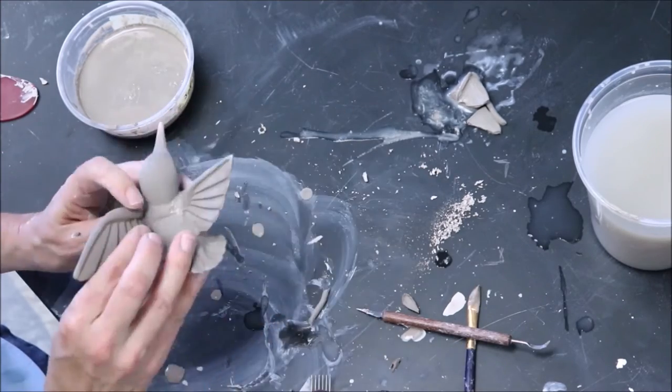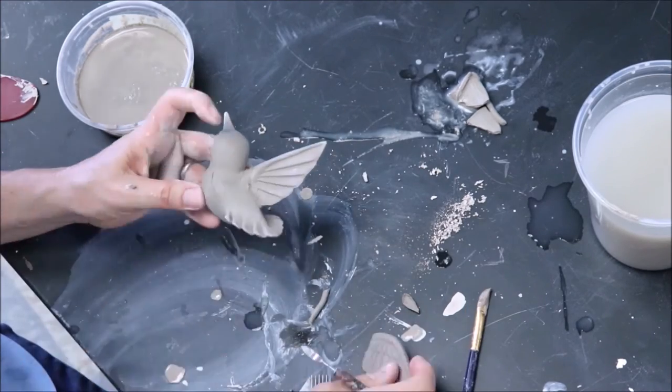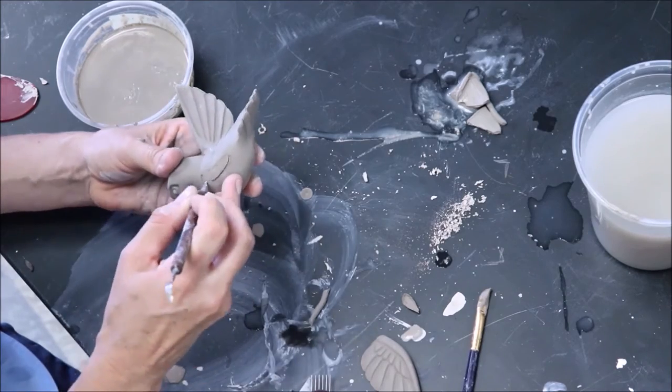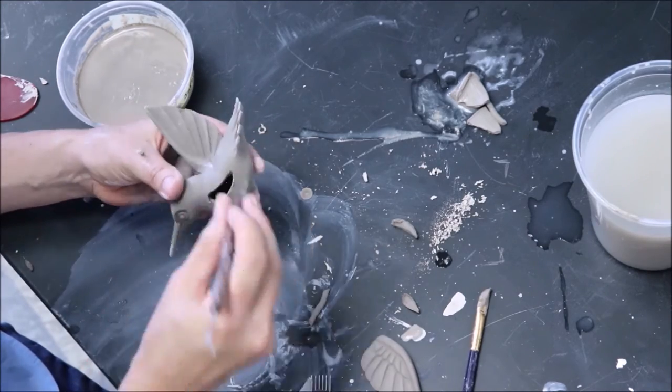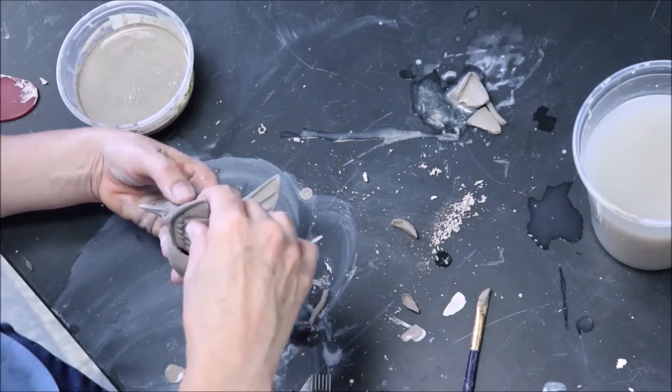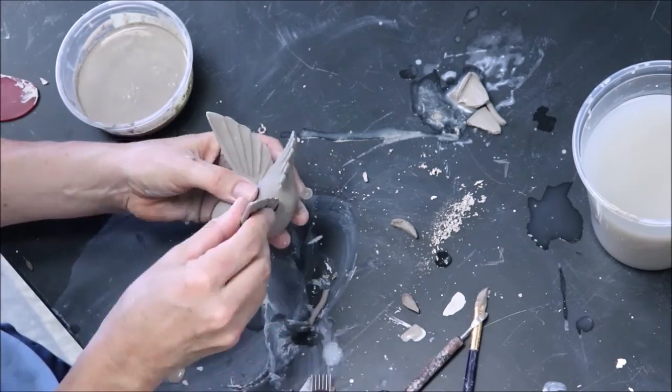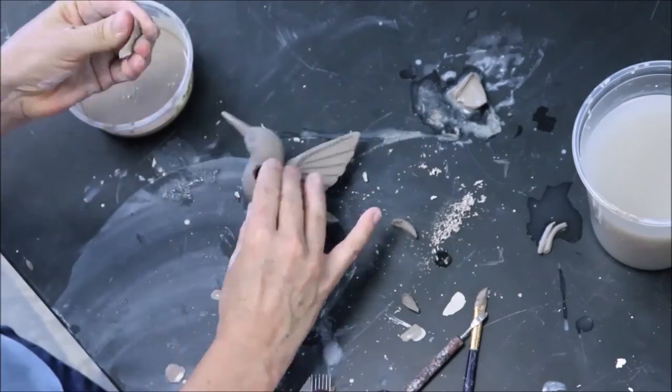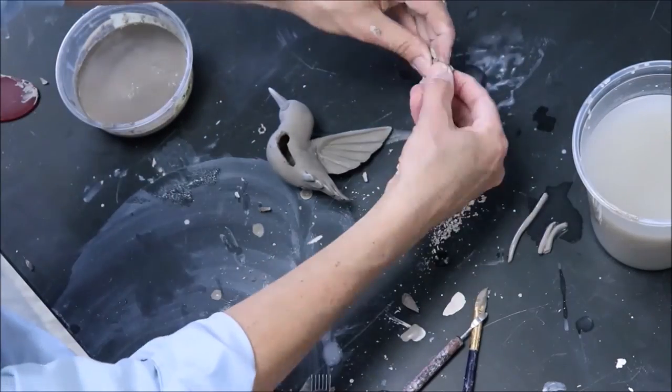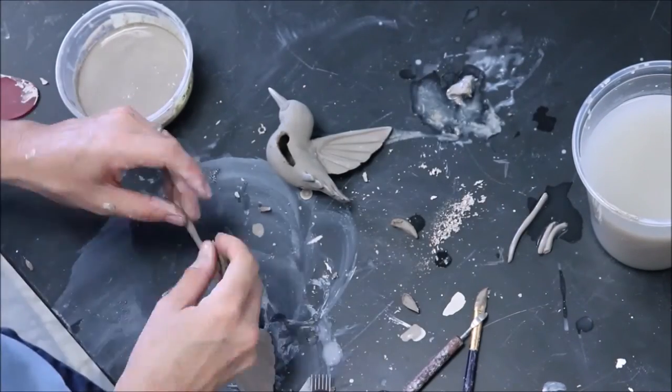The first reason we deflocculate our slip is to thin our slip by using half of the water that it would normally take to make a slip runny. That's right. By making the clay particles deflock, we actually create a very runny slip with half the water we normally would need. It's like magic.